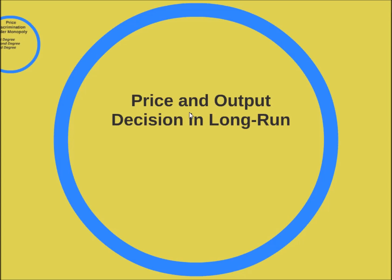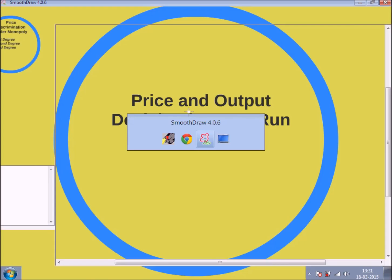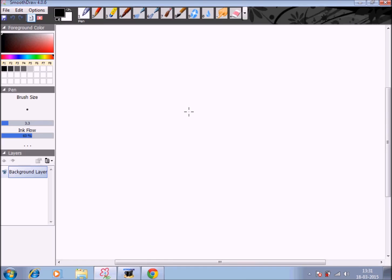Now let us assume for the time being that there are no limits for the expansion of a monopoly firm, and let's discuss how price and output is determined under monopoly in the long run. We will depict this with the help of a graph.